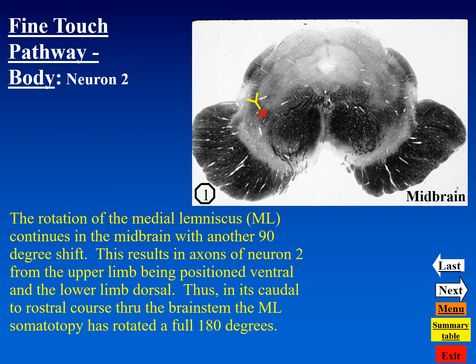In the midbrain region, the medial lemniscus has continued its rotation to about 90 degrees, so the axons of neuron two are now oriented such that the upper limb is more ventrally positioned and the lower limb is dorsally positioned.